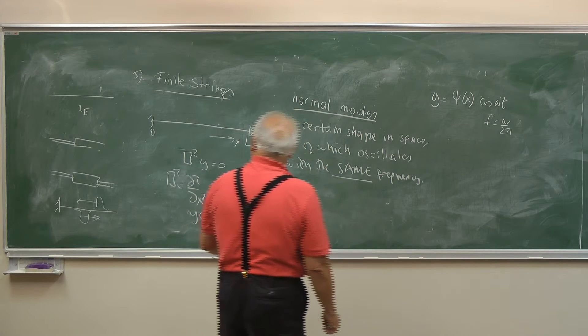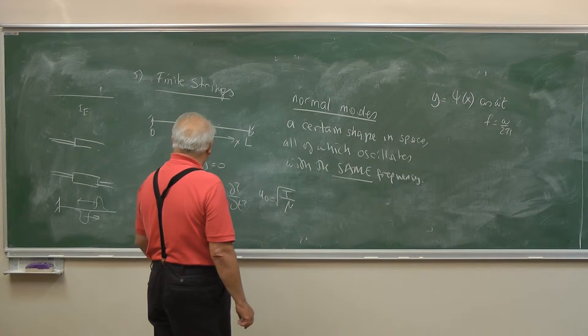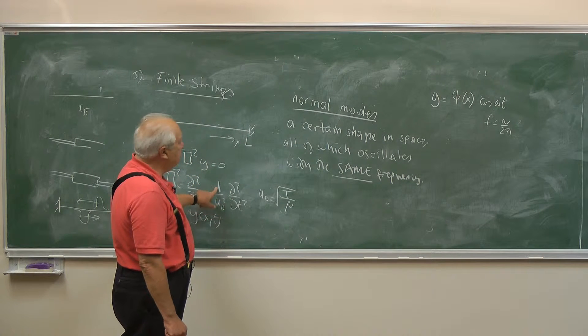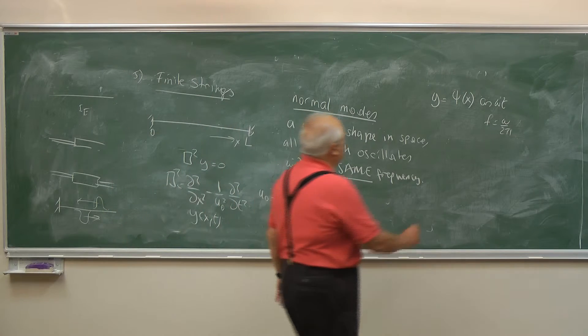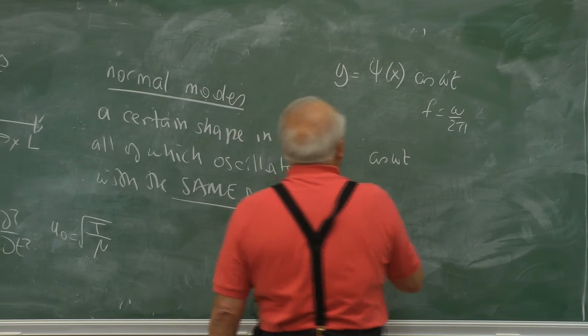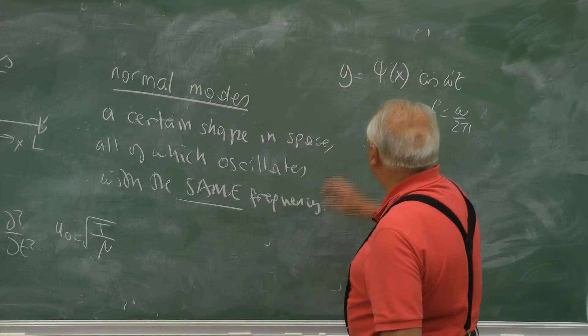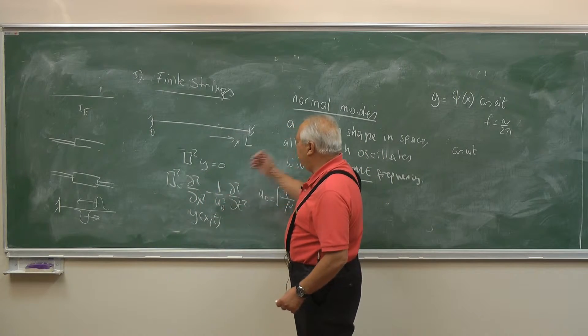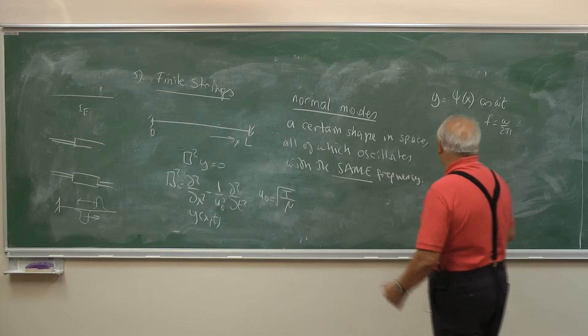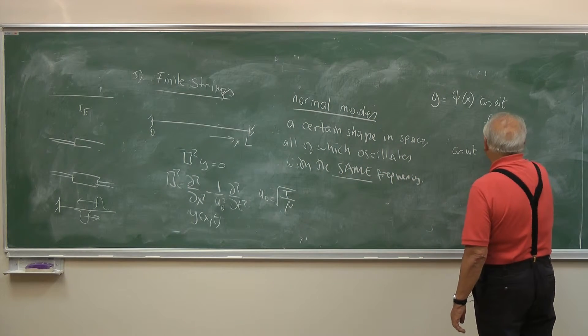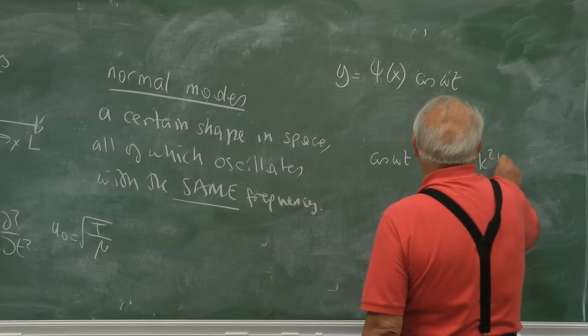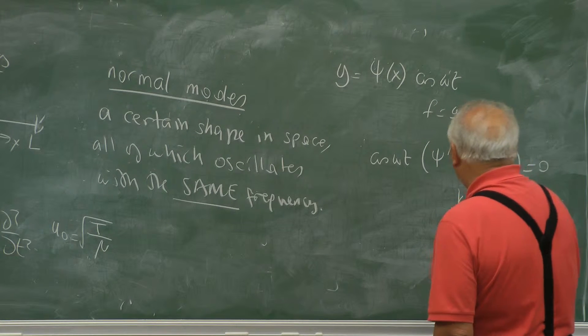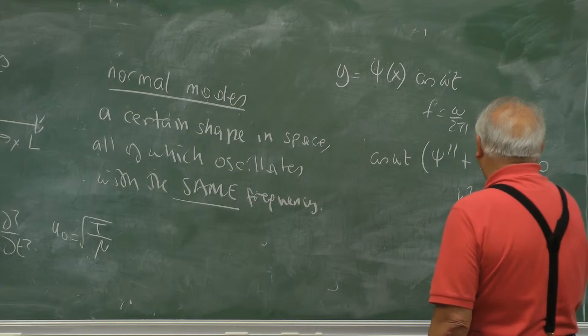So this we insert in here. Cosine ωt, taken the derivative twice, gives me minus ω². So the equation satisfied by ψ is: ψ'' + k²ψ = 0, where k² = ω²/u₀².